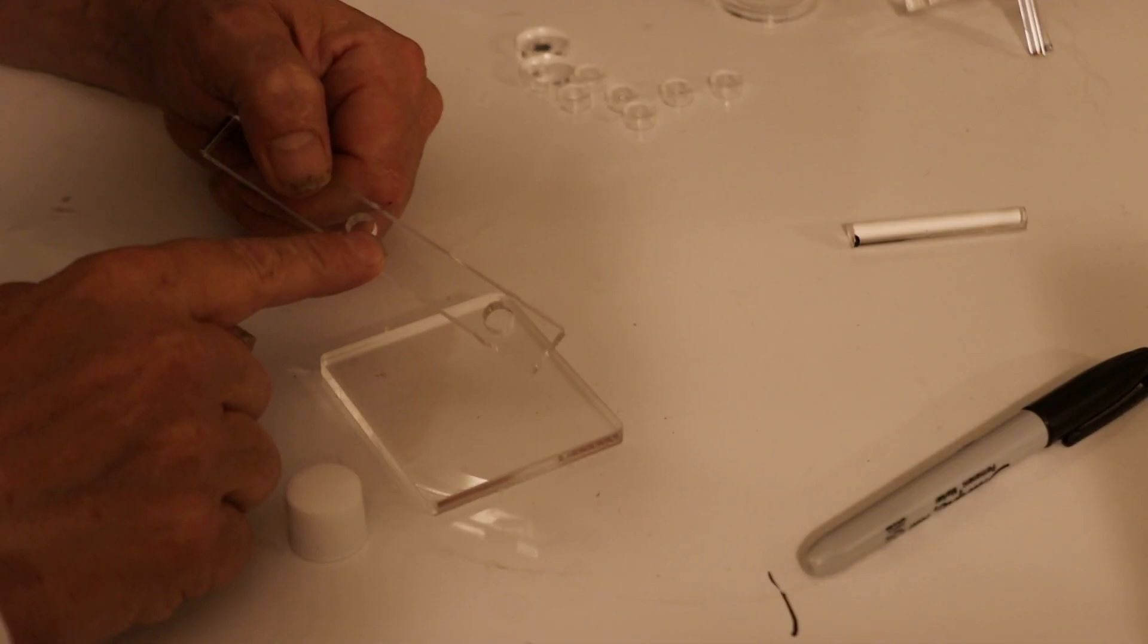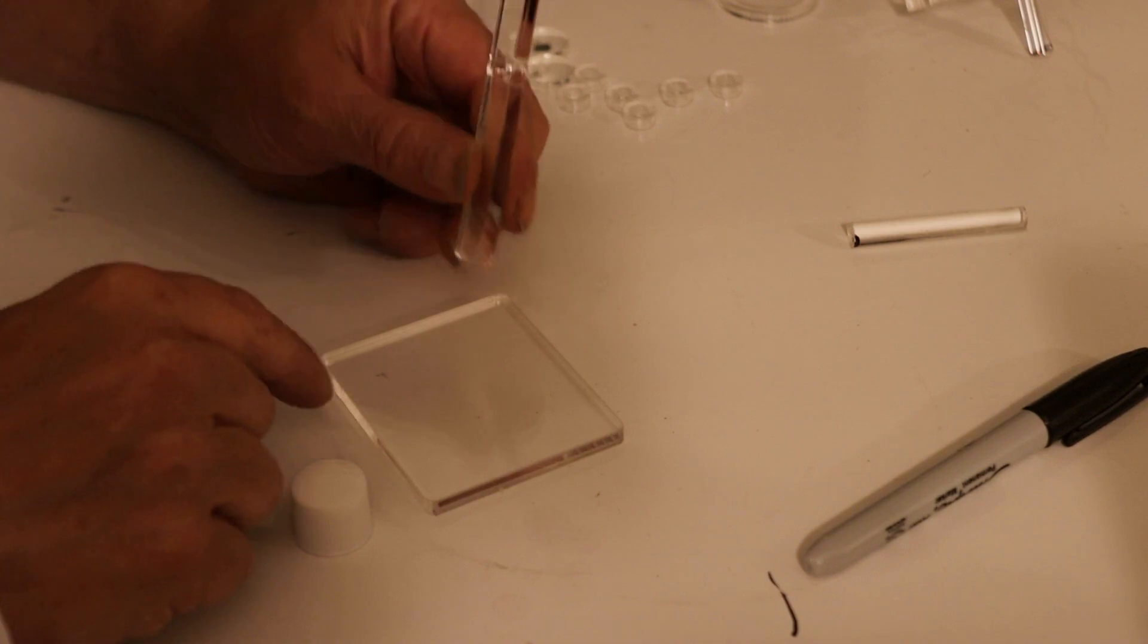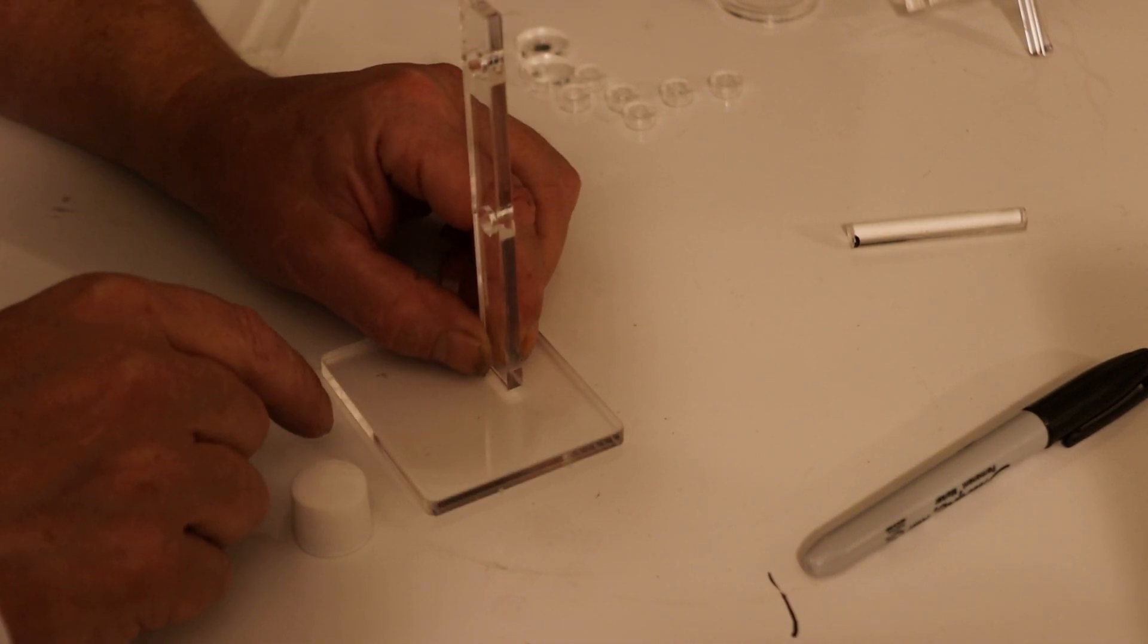And when it's drying we need to glue this upright onto the base plate more or less there so that it's at 90 degrees to the base plate.